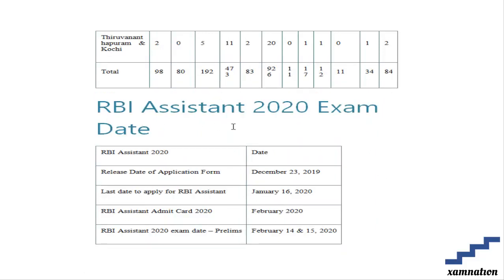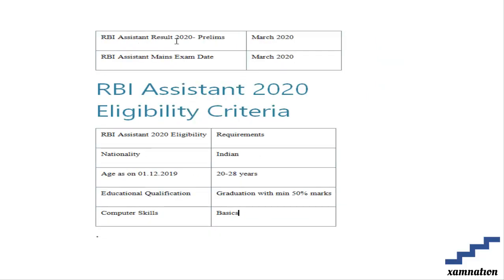Now let us see the important dates for RBI Assistant 2020. The application form was released on 23rd December 2019. The last date to apply is January 16th, 2020. The prelims admit card will be released by February 2020, and the prelims will be held on February 14th and 15th, 2020.